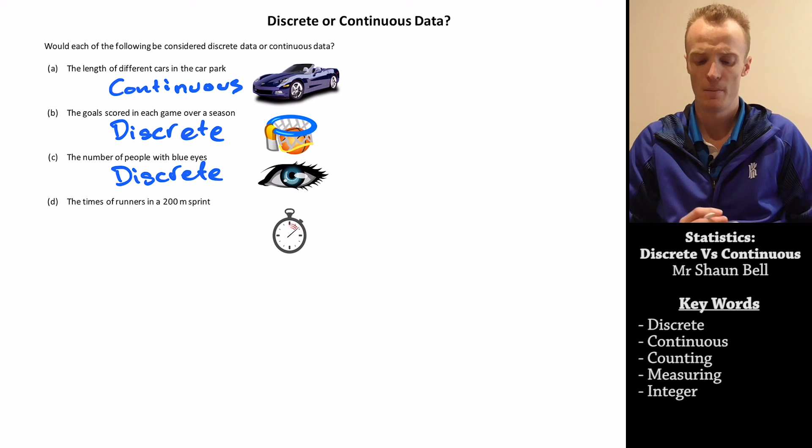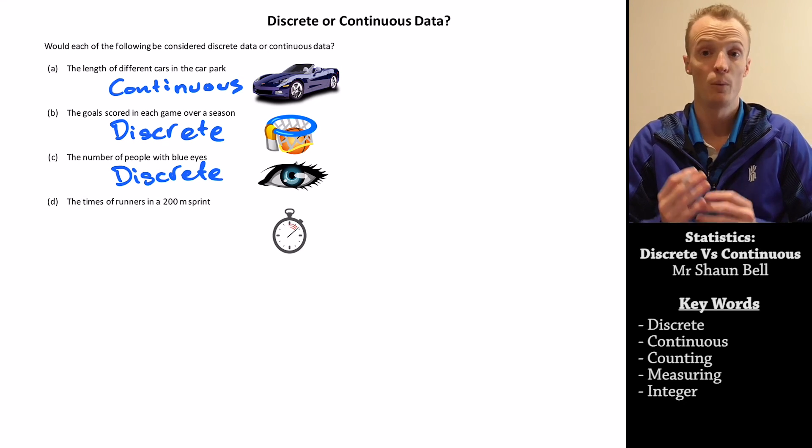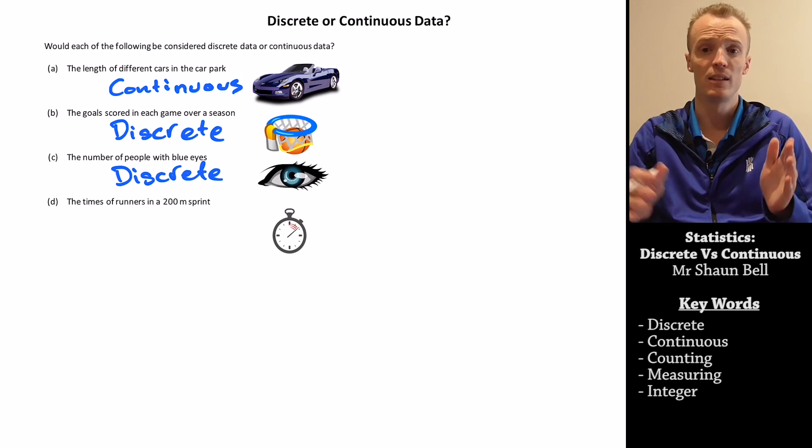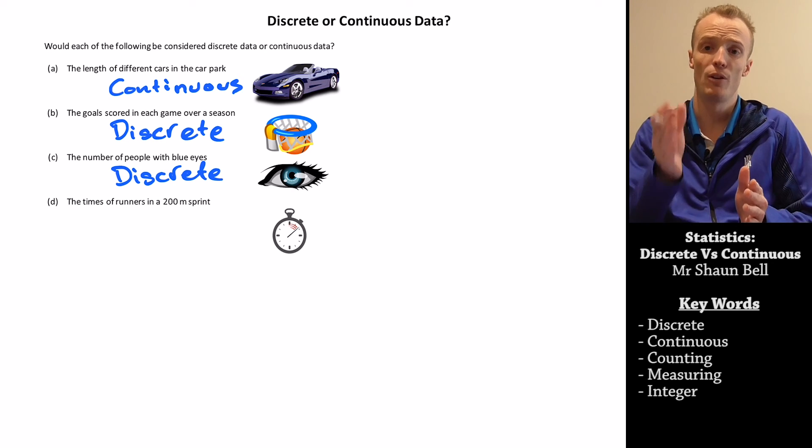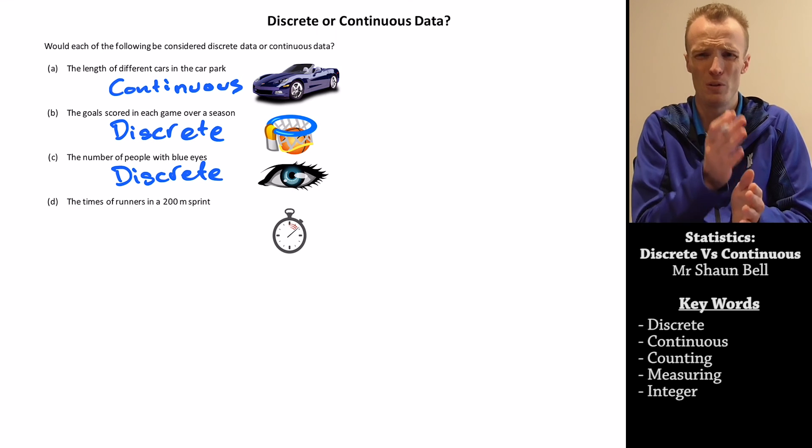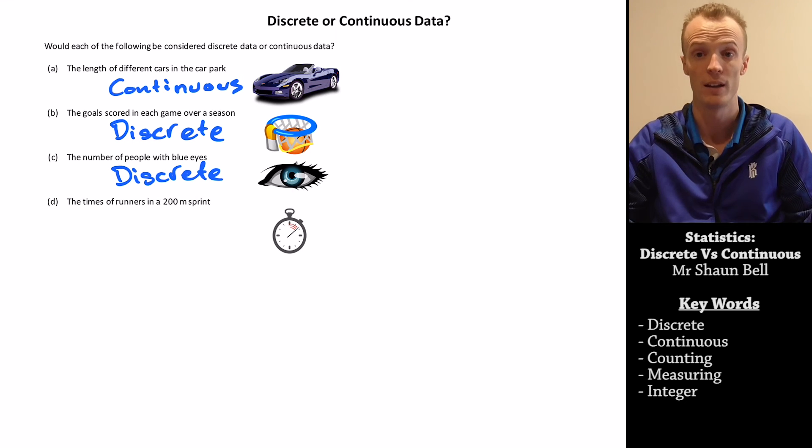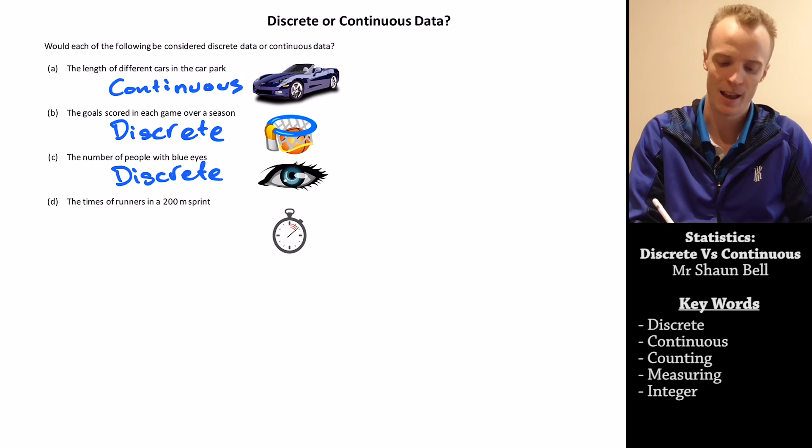And finally D, the time of runners in a 200 metre sprint. Now that's something that we measure. Time is continuous. It doesn't just go one second, two seconds, you've got all those milliseconds in between. So that means this is a continuous data set.